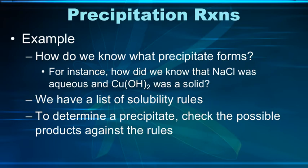So how do we know which one is the precipitate? How do we know, for instance, that NaCl is aqueous, but Cu(OH)2 formed a solid? There's a list of solubility rules. So to determine a precipitate, we're going to check the products against the possible rules. And those rules are on the next slide.